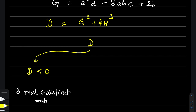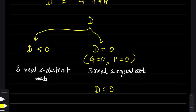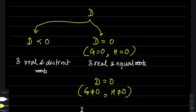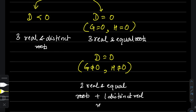If your D value equals zero, AND your g and h are also equal to zero, the equation will have three real and equal roots. However, if D equals zero but g and h are individually non-zero, you will have two real and equal roots plus one distinct real root — three real roots, two of which are the same and one is distinct.